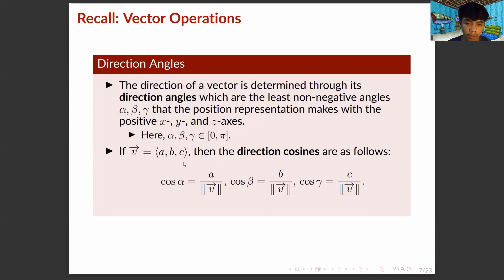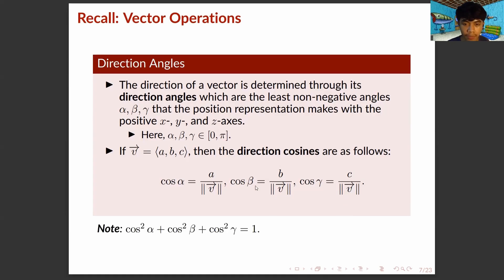If vector V equals (A, B, C), then the direction cosines are as follows: cosine alpha equals A over the magnitude of vector V; cosine beta equals B over the magnitude of vector V; and cosine gamma equals C over the magnitude of vector V. Note that cosine squared alpha plus cosine squared beta plus cosine squared gamma equals 1. This can be proved by squaring these expressions and adding them up.